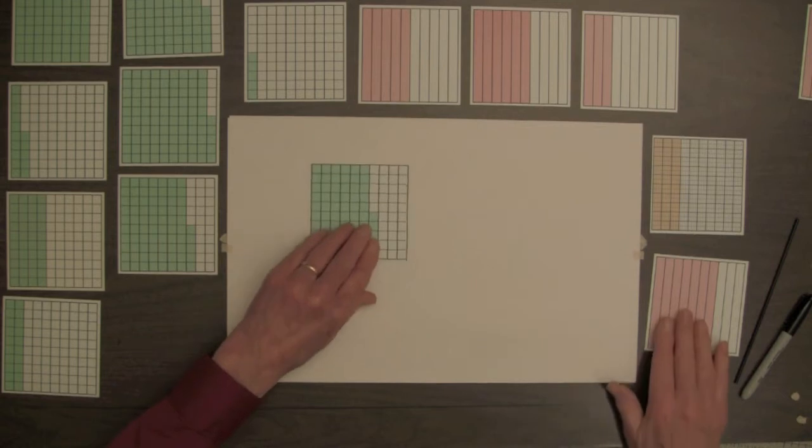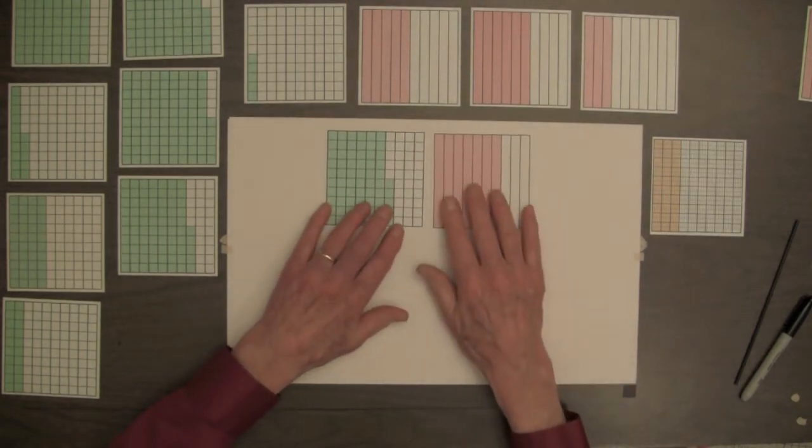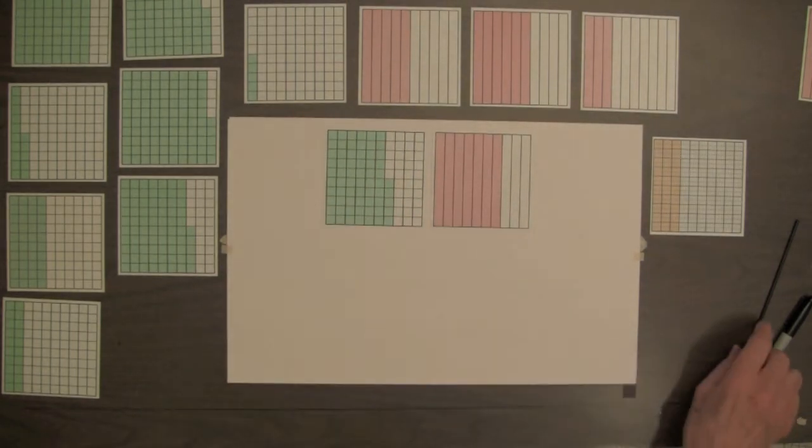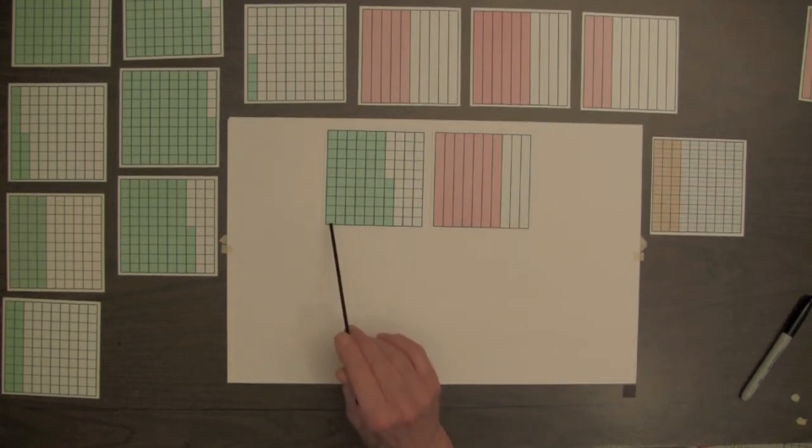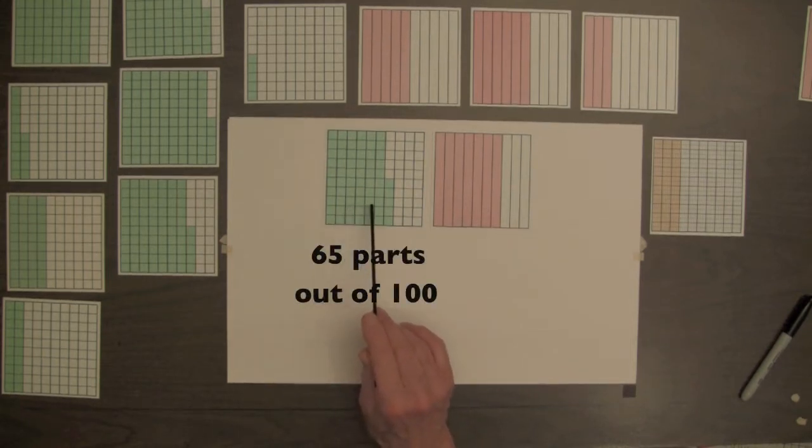Let's compare the shaded amounts of two decimal squares. The green square has ten, twenty, thirty, forty, fifty, sixty, sixty-five parts shaded.